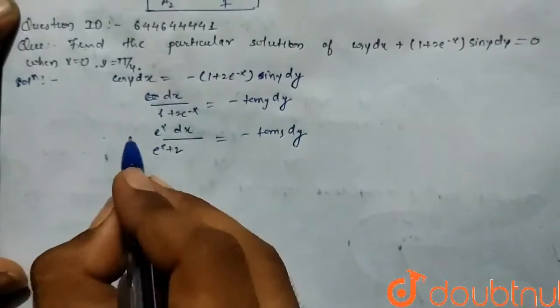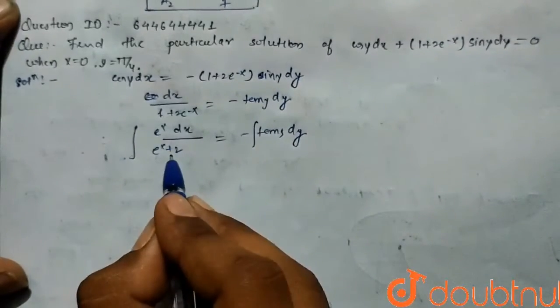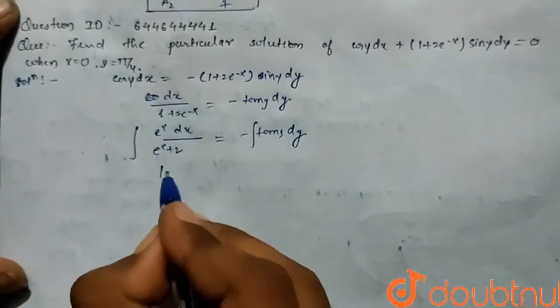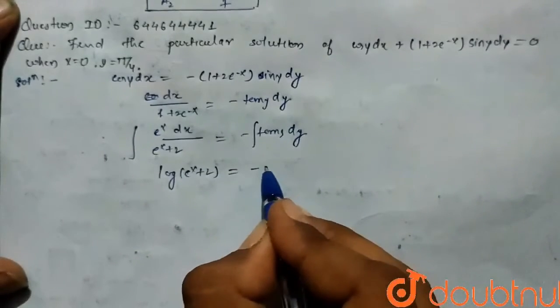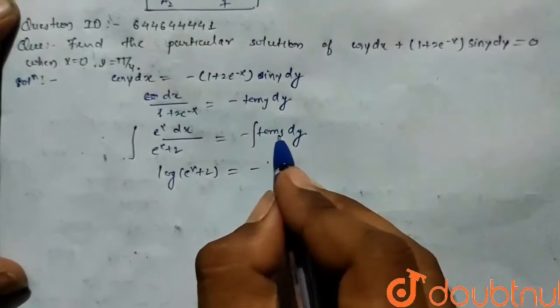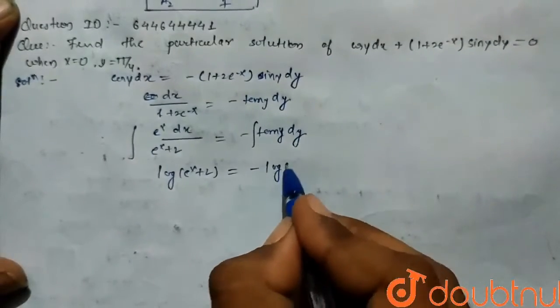On integrating both the sides, the integration being taken t, then this will come dt. So log of e to the power x plus 2 is equals to minus the integration of tan y, which is given as log of cos y.